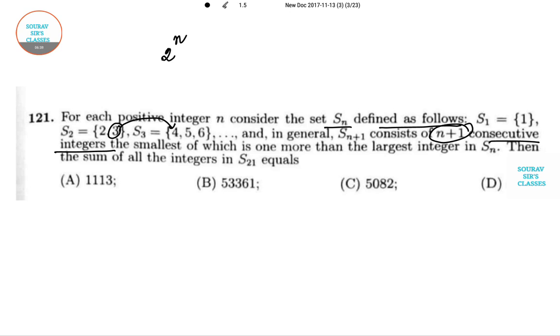Remember, the largest integer is a triangular number. The formation is n times (n+1) divided by 2. So the largest number in S_20 will be 20 times 21 divided by 2, that is 210.